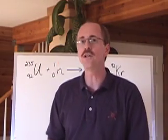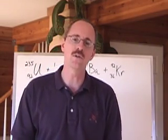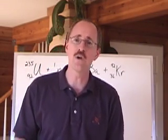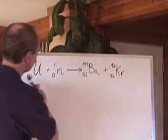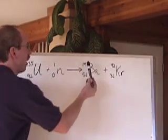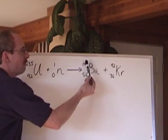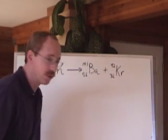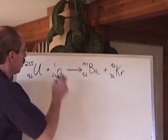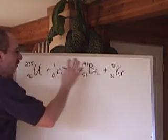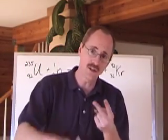Now, here's the thing. For nuclear chemistry, generally at the high school level, you've just got to know a few things. One is that when you have a nuclear equation and you have written elements in their mass number and atomic number scripts, the reactants and products must conserve mass number and atomic number.